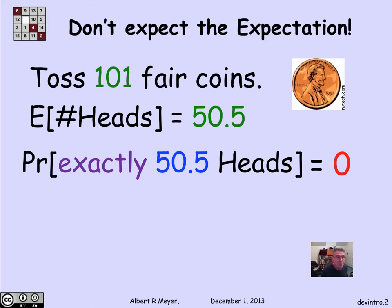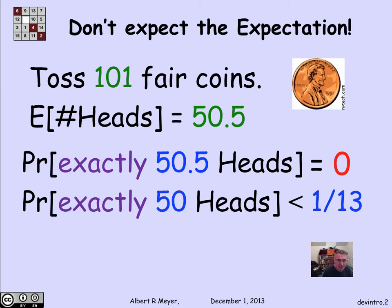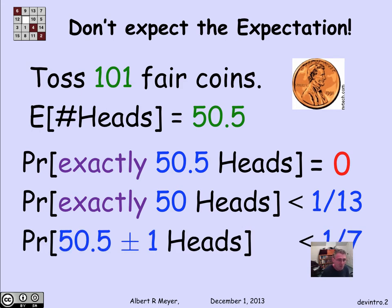So you don't expect the expectation in that sense. In no given measurement, no given experiment, is going to yield the expectation. The expectation is this thing that we expect to come out on the average. Well, we can ask, what's the probability of getting as close as you could hope to get to the expectation? Namely, what's the probability of getting exactly 50 heads? And it's about 1 in 13th. Or if you ask, what's the probability of getting either 50 or 51 heads being within plus or minus 1 of the expectation? It's about 1 in 7th.